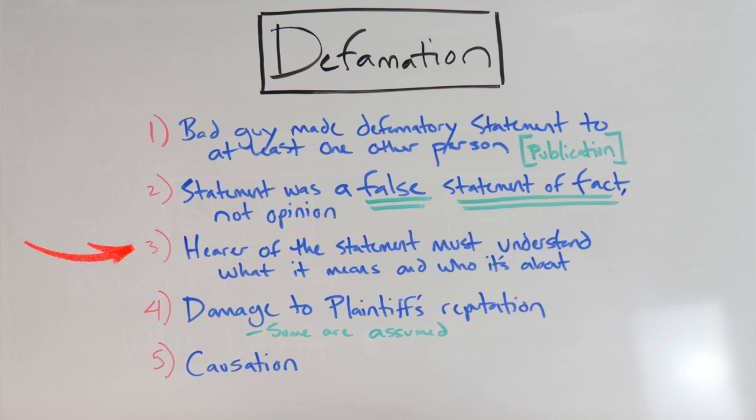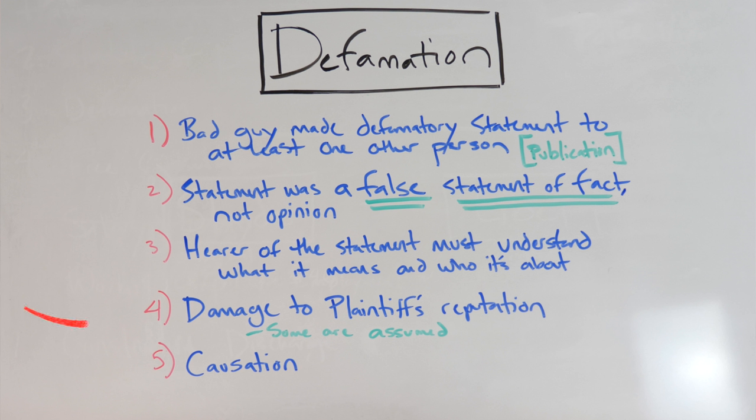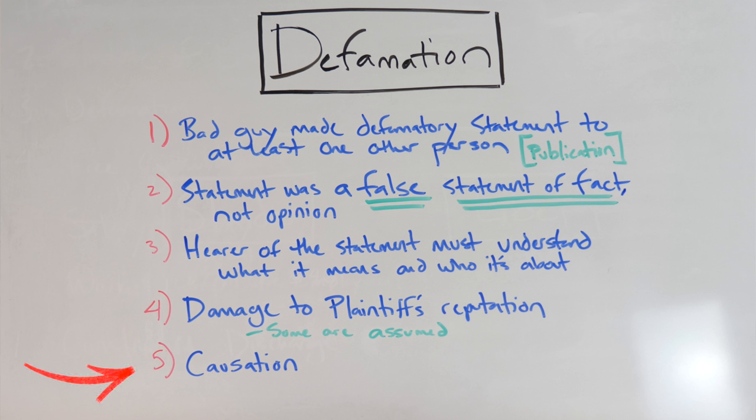Three: the hearer of the statement must understand what it means and who it's about — i.e., the victim. Four: it has to cause damage to the plaintiff's reputation. Now some of these damages are usually assumed, but not always. And five — this is important — the damage that the employee is complaining about was actually caused, causation, by the false statement of fact and not by something else.